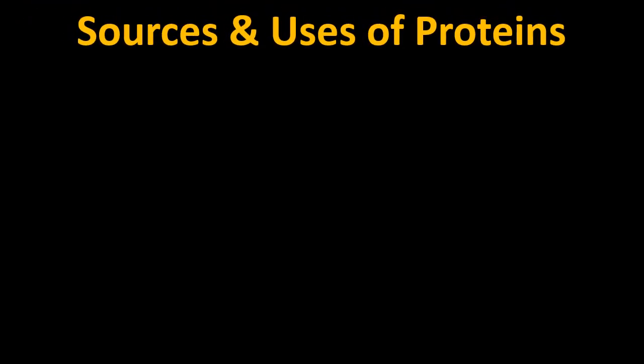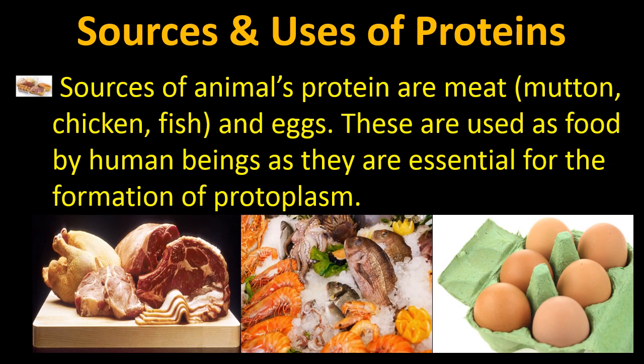Proteins can be obtained from two ways: it can be plant protein or animal protein. Animal proteins are very important. We get them from meat — it can be mutton, chicken, fish and eggs as well. These are used as food by human beings and they are very essential for the formation of protoplasm. The protoplasm is a very important part of our cell, so if cells are healthy, we are healthy.